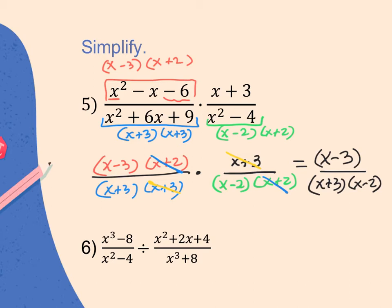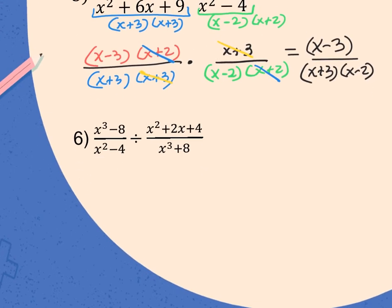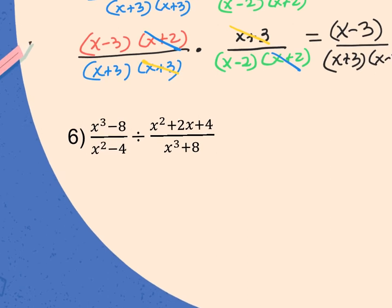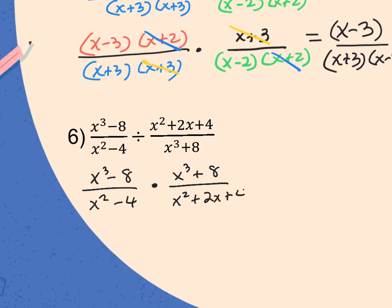The next four examples are division. We do exactly the same thing, except we do a keep-flip-change first. I like to do the keep-flip-change before I begin so I don't forget to flip the fraction once I'm deep in factoring. Keep the first fraction, change division to multiplication, and flip the second fraction upside down.